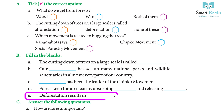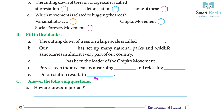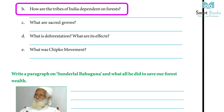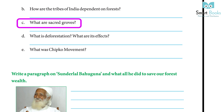Exercise C — Answer the following questions. (a) How are forests important? Answer: Forests help conserve the soil as the roots of trees prevent erosion; they keep the air clean by absorbing carbon dioxide and releasing oxygen. (b) How are the tribes of India dependent on forests? Answer: The tribes of India are dependent on forests for their livelihood; they get food and other resources from the forest.